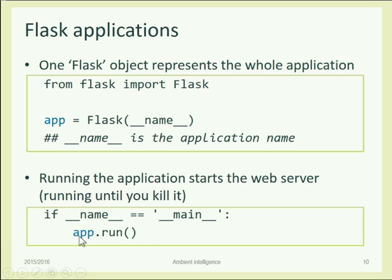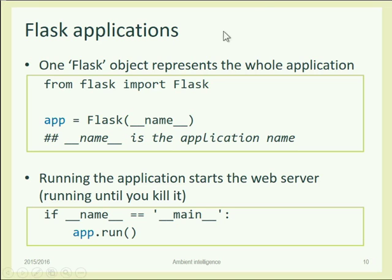You create a new web application by creating a new Flask object with a given name. The `__name__` variable is a good choice for the parameter. What the Flask call does is create a new web application stored in the variable `app`. This web application can be run by calling the `run()` method on the app object. When the application is created it's not running yet — we need to run it explicitly. When we call `run()`, the web application stops normal execution and starts waiting for HTTP requests — it starts doing the web server job.